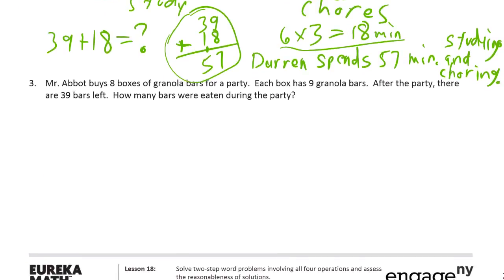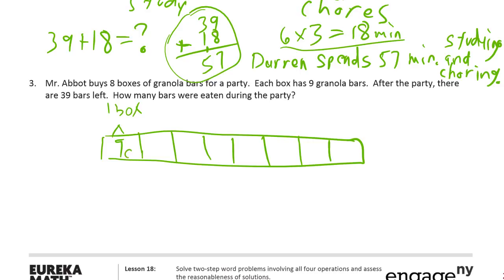Mr. Abbott buys eight boxes of granola bars for a party. Each box has nine granola bars. After the party, there are 39 bars left. How many bars were eaten during the party? So, eight boxes of granola bars for a party. A piece of tape with eight boxes. One, two, three, four, five, six, seven lines inside makes eight boxes. Each box has nine. I'm going to label this as one box. Nine G for granola bars. These are all nines.